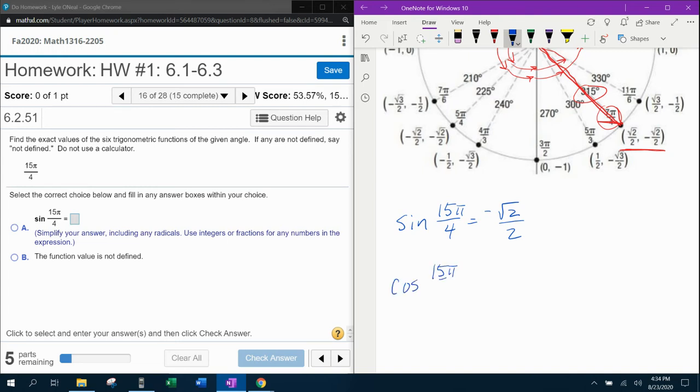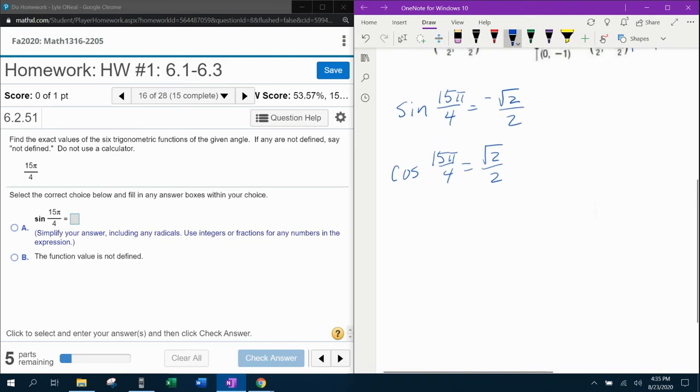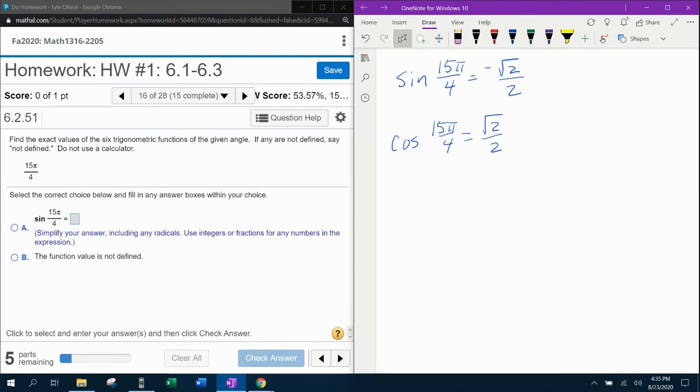Cosine of 15π over 4—sine is y, cosine is x—and that's going to be square root of 2 over 2. How did I get that? That's the x coordinate from this ordered pair. Remember, everything comes off of this ordered pair at 7π over 4 because it's equivalent to 15π over 4.